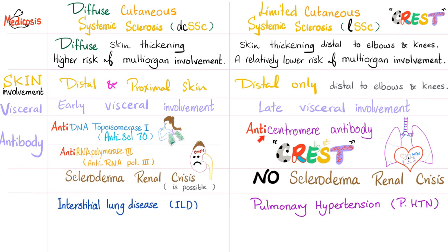The limited form has anti-centromere antibody — C for centromere. So in CREST syndrome, C stands for two things: calcinosis cutis and anti-centromere antibody. Raynaud's phenomenon presents with red, white, and blue color changes. E is esophageal dysmotility, S is sclerodactyly (shiny, tight, thick skin), and T is telangiectasia (dilation of small blood vessels). Scleroderma renal crisis is possible in diffuse cutaneous but almost non-existent in limited CREST syndrome. For lung problems: diffuse cutaneous causes interstitial lung disease bilaterally; limited cutaneous usually causes pulmonary hypertension.